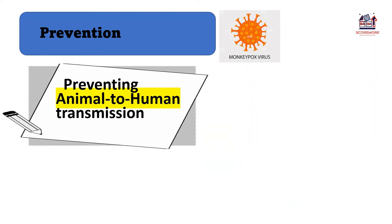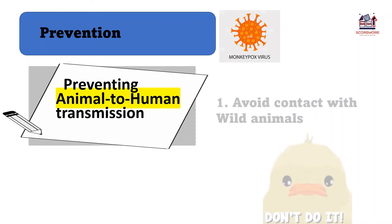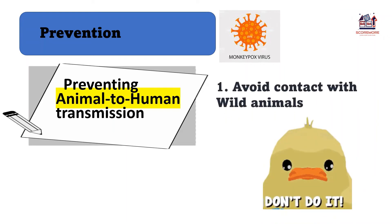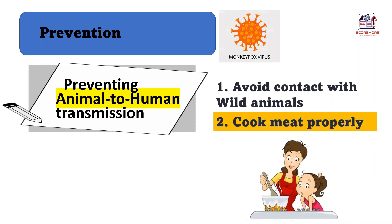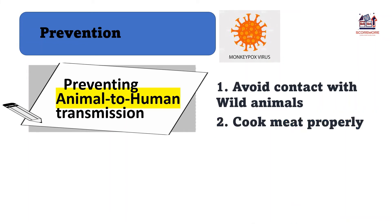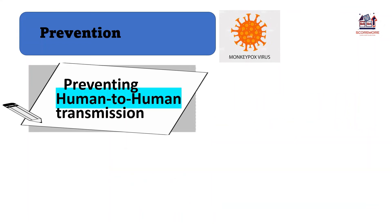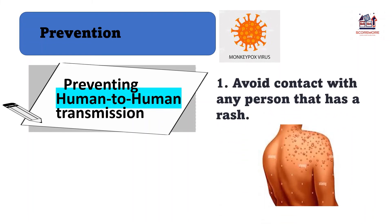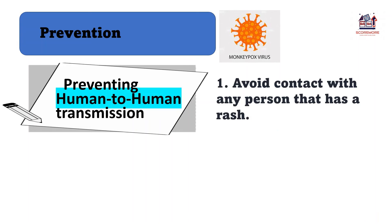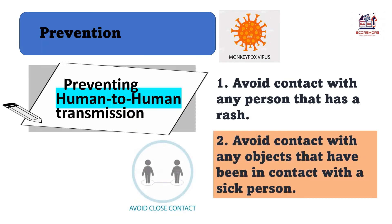To prevent animal-to-human transmission, avoid contact with wild animals, cook meat properly, and avoid contact with any objects that have been in contact with a sick animal. To prevent human-to-human transmission, avoid contact with any person who has a rash, and avoid contact with objects that have been in contact with a sick person.